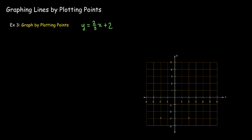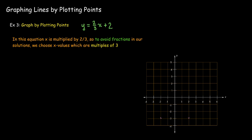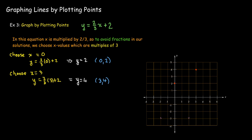In our third example, we can see that x is being multiplied by a fraction, 2 thirds. So I would like to choose values for x, but I don't want to plot points where the coordinates are fractions. And so, the way that I can avoid that when x is being multiplied by a fraction is I look at the denominator here, which is 3. And so I'm going to choose x values which are multiples of 3. And that way, I'll get a whole number for x and a whole number for y, or at least an integer. So if I choose x equals 0, then I'll get y equals 2. So if I choose x equals 3, 2 thirds of 3 is 2, and 2 plus 2 makes 4.